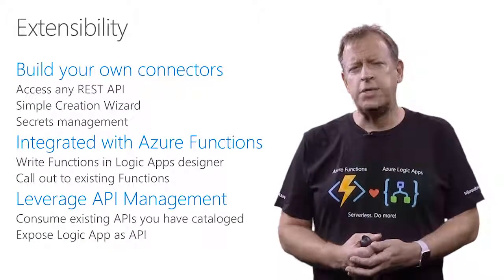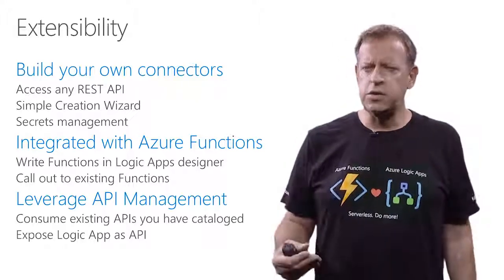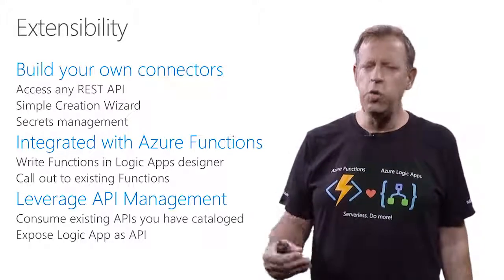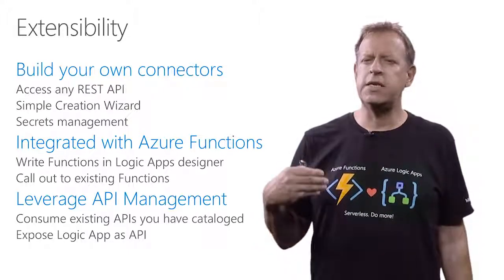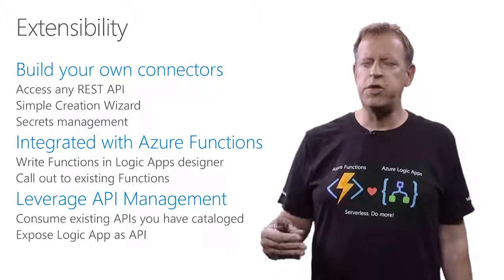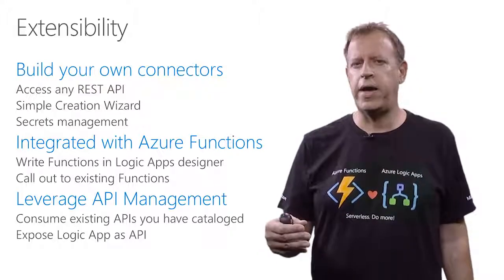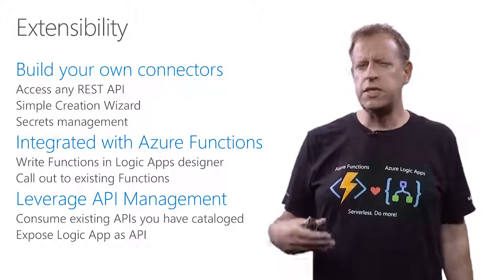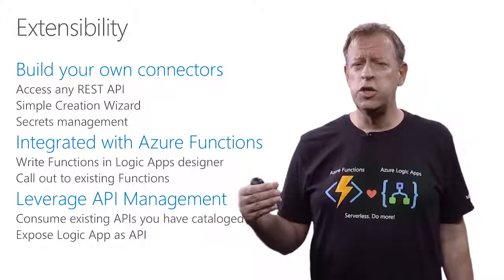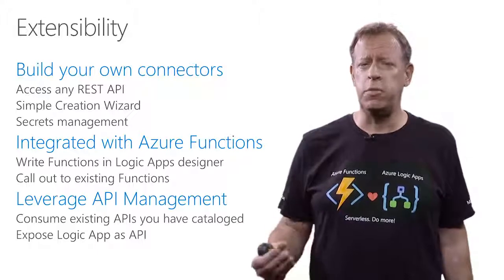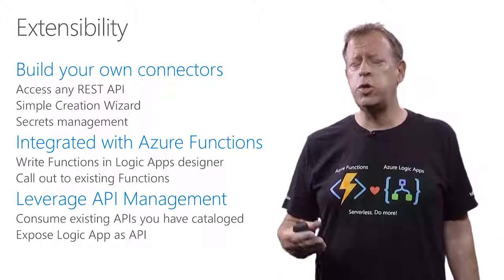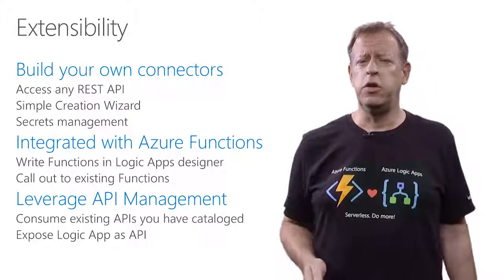Logic Apps is extensible. You can build your own connectors on top of the nearly 200 that we provide and connect to your own line of business systems, your own APIs, and even connect to SOAP services that you have with public endpoints, and very soon on-premises as well. We're also extensible with other Azure services, particularly Azure Functions, another one of our serverless capabilities. You can call Azure Functions from Logic Apps, you can even create an Azure Function from inside of Logic Apps, and you can go the other way around as well — having functions invoke a Logic App.